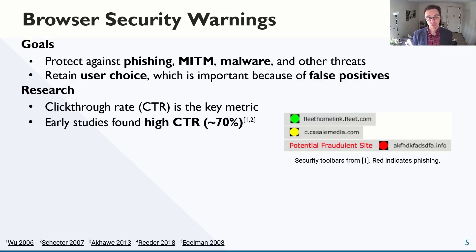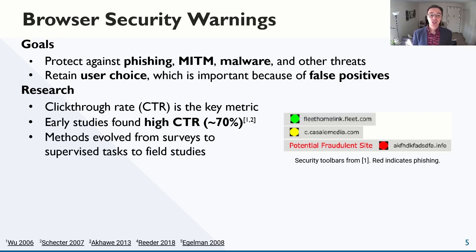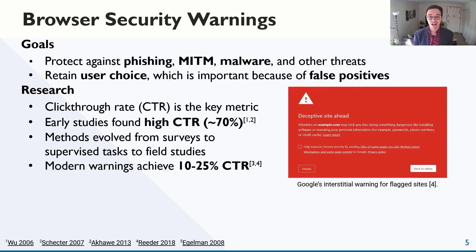The first study of browser warnings found a 70% click-through rate for phishing warnings of the day, which would appear as browser toolbars. Over the next decade, usable security researchers studied warning effects using surveys, supervised tasks, and eventually large-scale field studies. The most recent of which found only a 10% to 25% click-through rate for modern malware and phishing warnings.